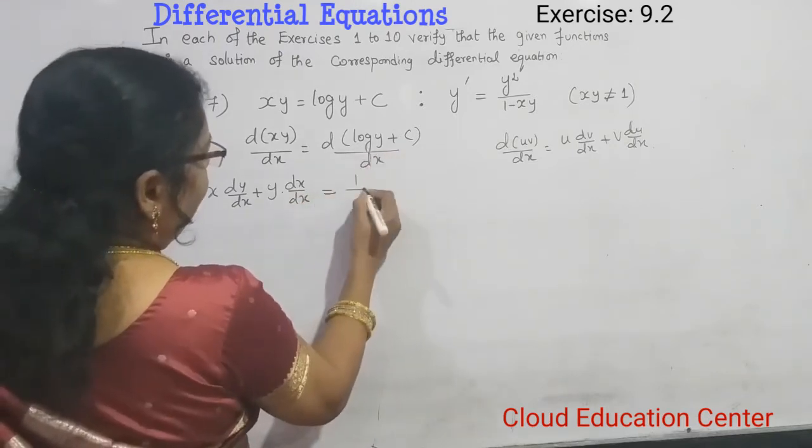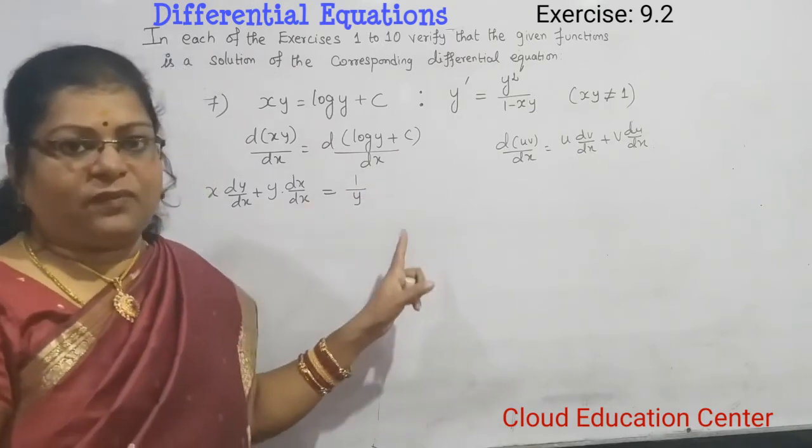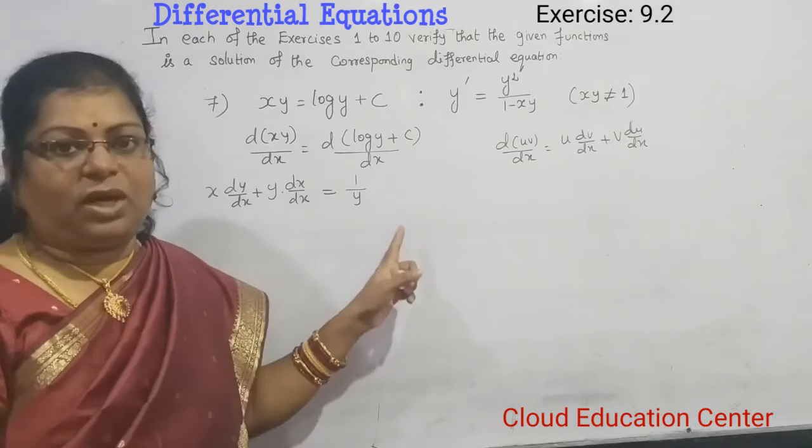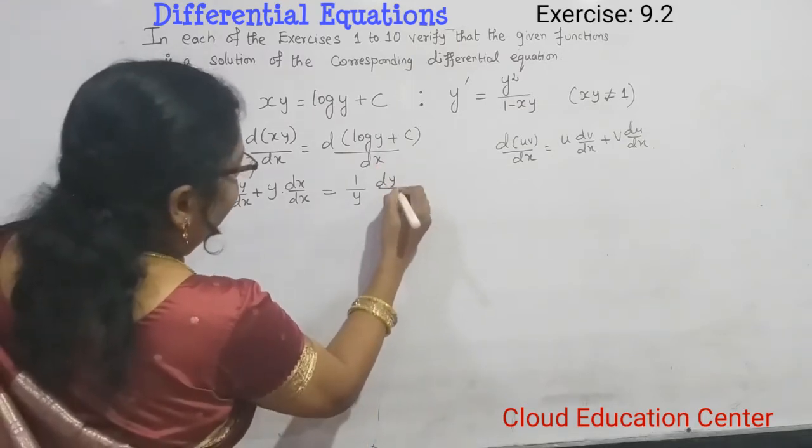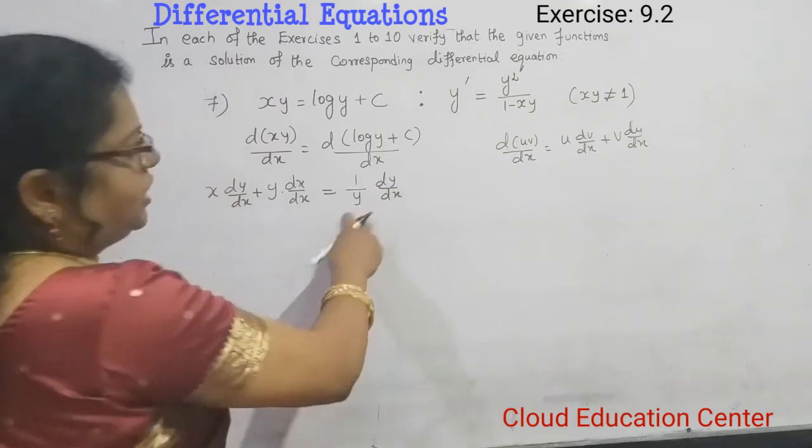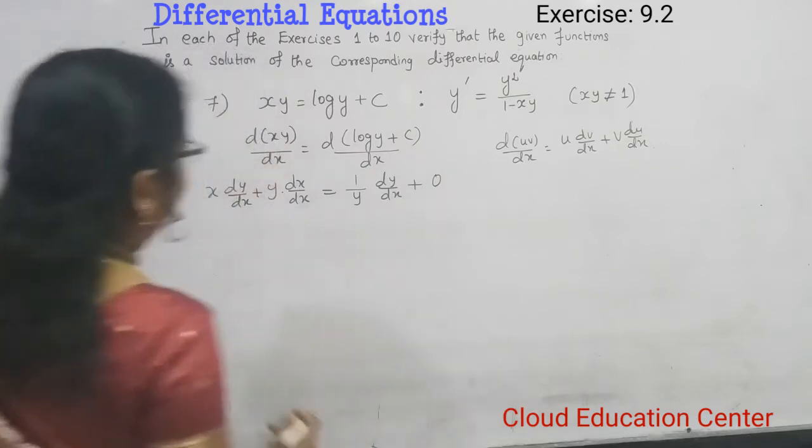Differentiation of log y gives us 1 by y. We can't stop here because y is there, so we should apply the chain rule. We will get dy by dx. As per the chain rule, we get dy by dx. Plus, when you differentiate constant, we get 0.